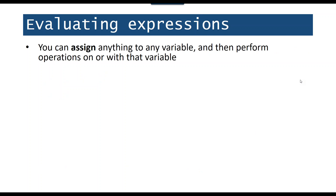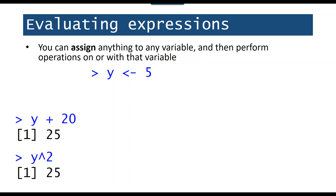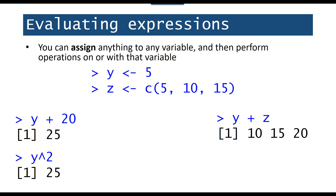You can assign pretty much anything to any variable and perform operations on it — restrictions on symbol names are listed in the handout. So if Y gets 5, I can say Y + 20, or Y squared. I could create another variable Z and assign to it a 3-element vector using the c() function, then add Y and Z together. R does something very unique called vectorization — in this case it's adding 5 to each element of Z. You can also call functions on values: the sum() function adds together all elements of Y and all elements of Z to get 35.